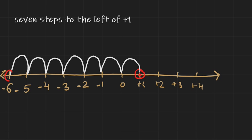So where did we reach? We reach at -6. So if we move 7 steps to the left of 1, our answer will be -6.